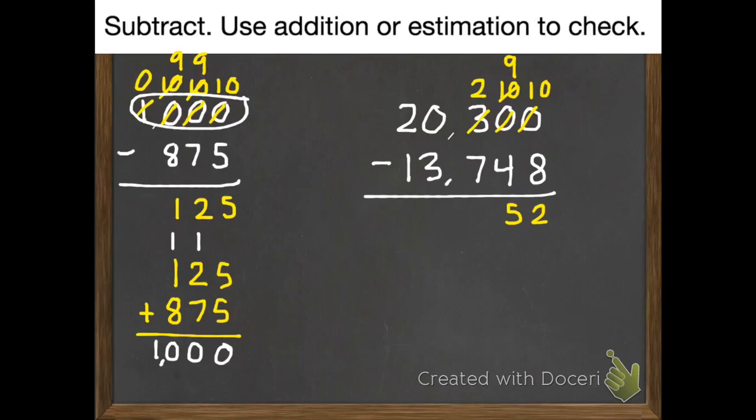Two subtract 7. Oh, stuck again. I need to borrow. I don't have any thousands. So I borrow from my ten thousands, which gives me ten thousands. But I need to borrow that thousand, which gives me 9. Which turns into ten more hundreds. Plus the 2 I had is 12.